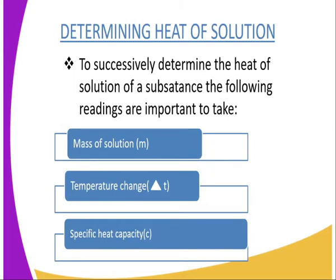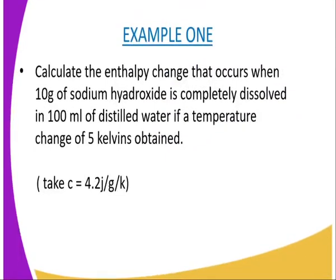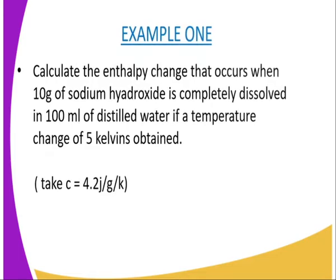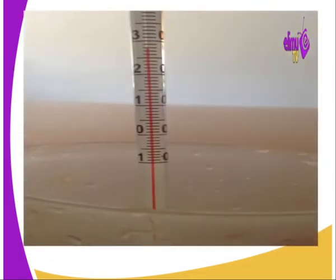The readings needed are: mass of solution, the temperature change — which you get by subtracting final temperature from initial temperature — and specific heat of solution, which is a constant. For instance, calculate the enthalpy change that occurs when 10 grams of sodium hydroxide is completely dissolved in 100 mils of distilled water and a temperature change of 5 kelvin is obtained. Take the specific heat capacity to be 4.2 joules per gram per kelvin. From this illustration, you'll be able to see how we get the temperature change from initial to final temperature reading.